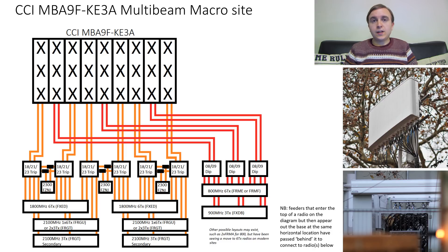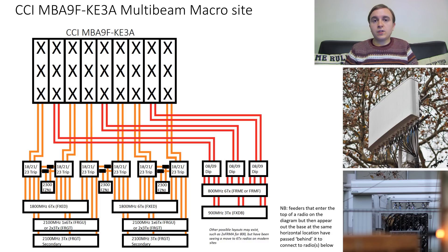For 900 MHz it's much the same story, but the FXDB is 3TX 6RX — and that's because 3G does not have two transmit streams to the device, and therefore three transmit is enough for providing one transmit per beam for the three-beam site. The connections from these radios are diplexed together, so the 800 and 900 MHz is combined into each beam of the CCI antenna.